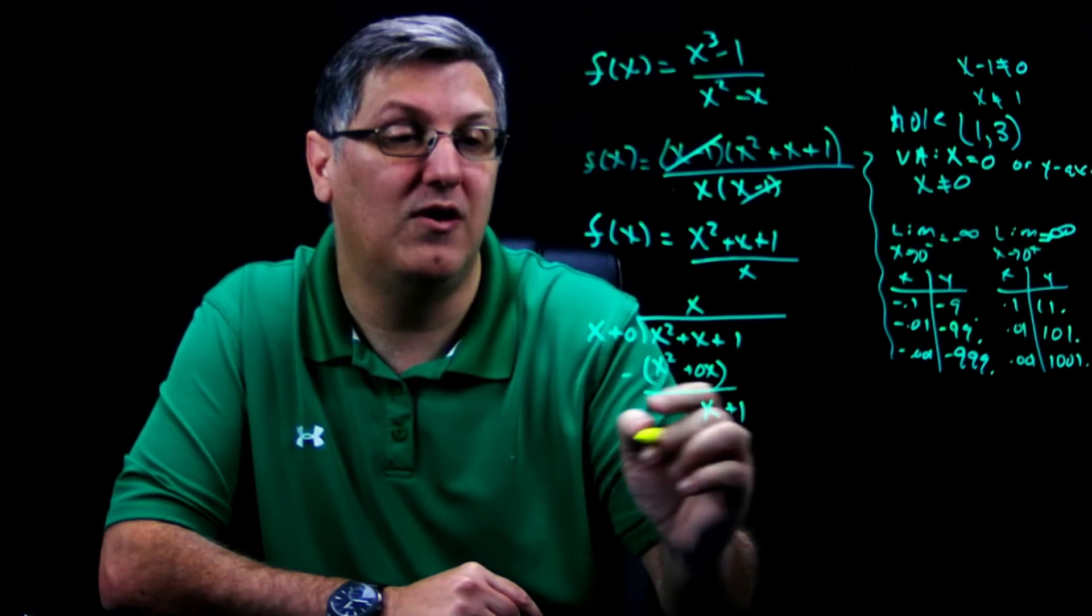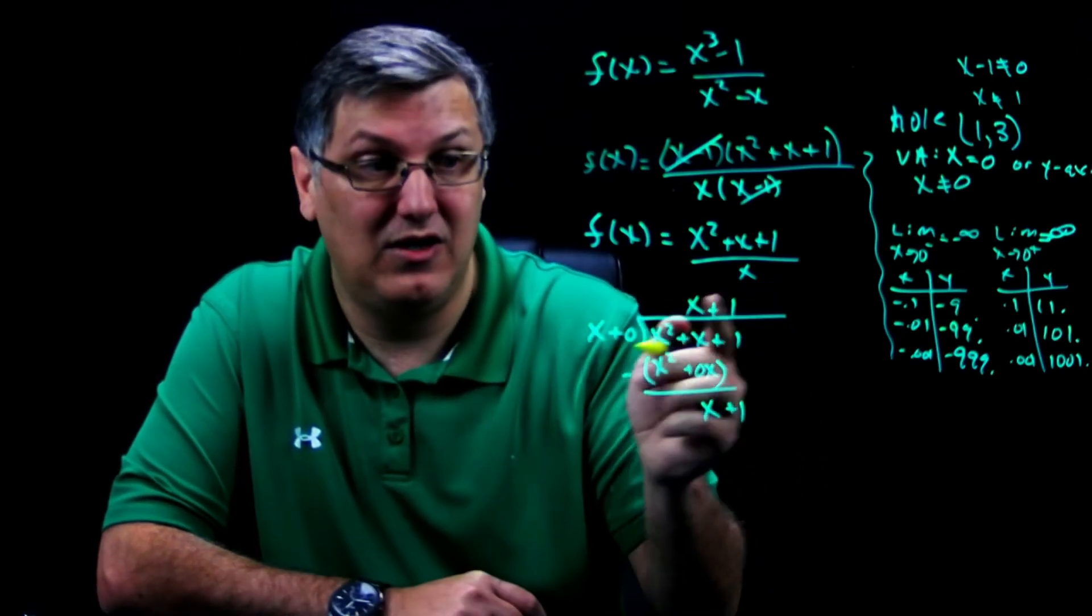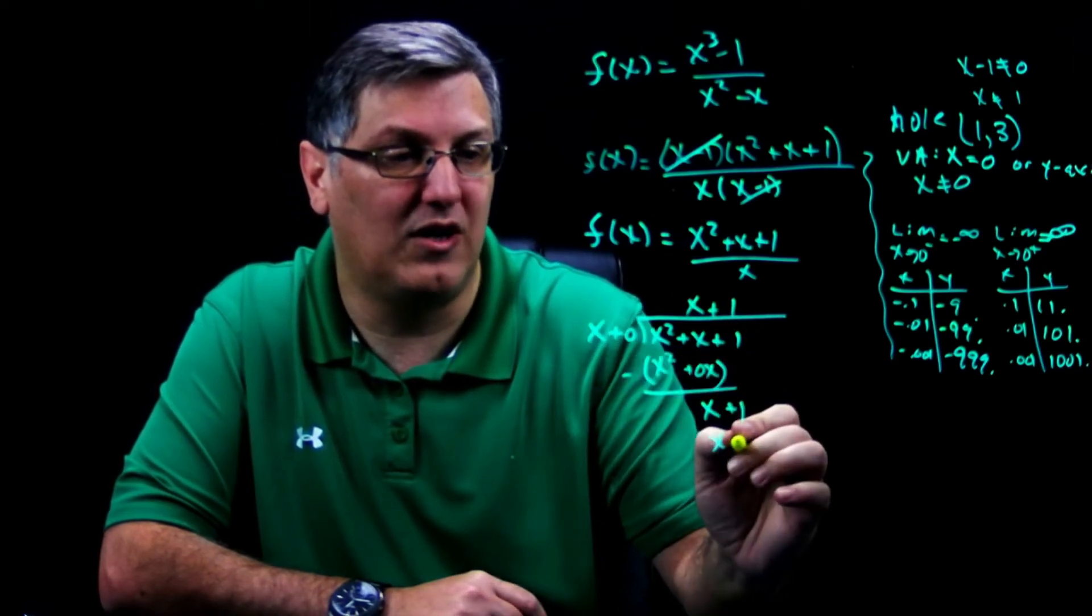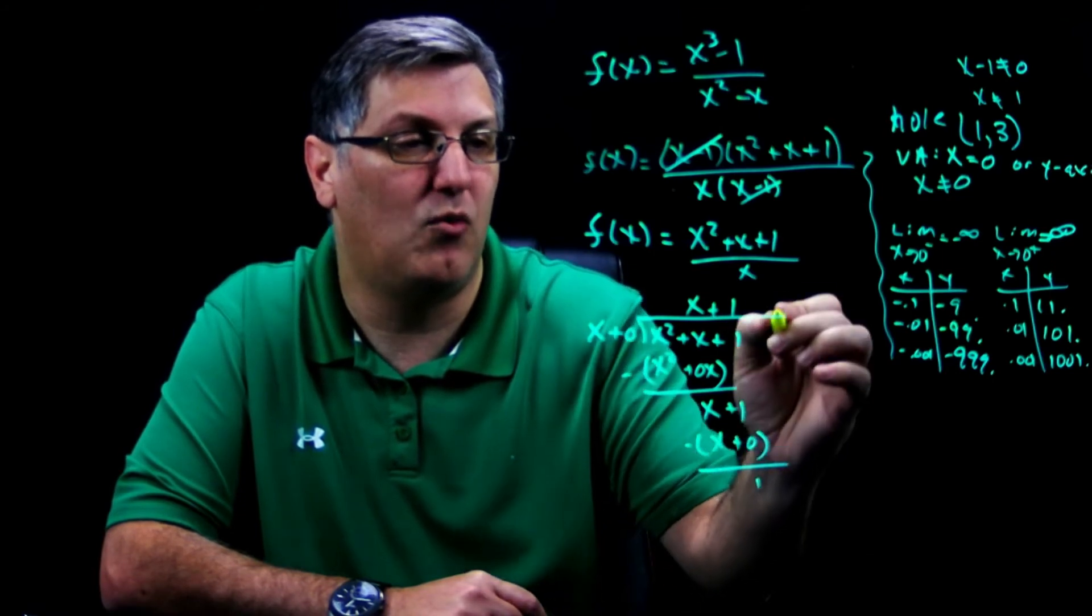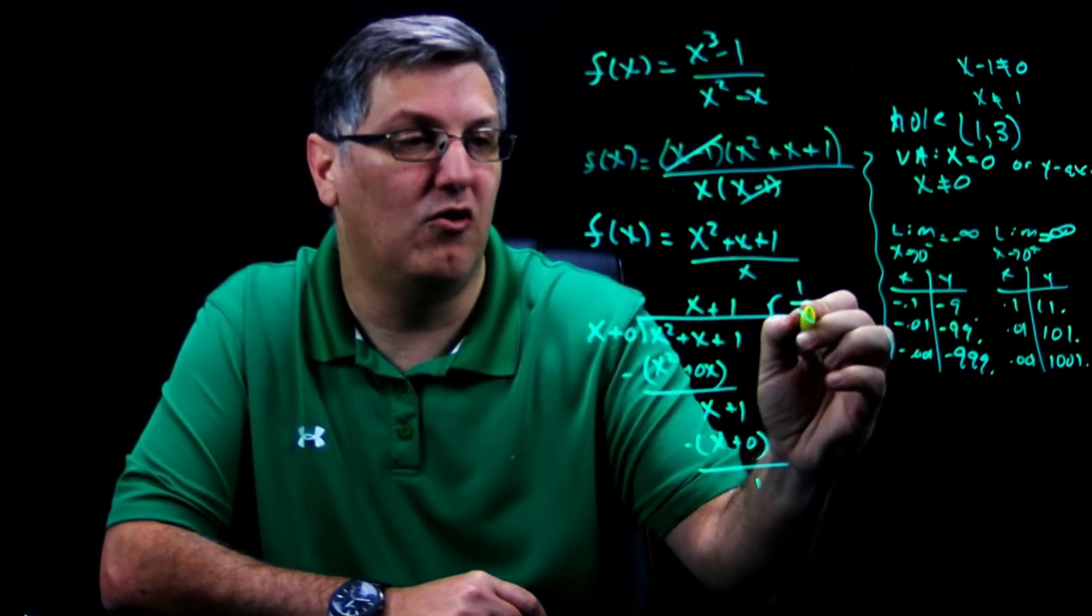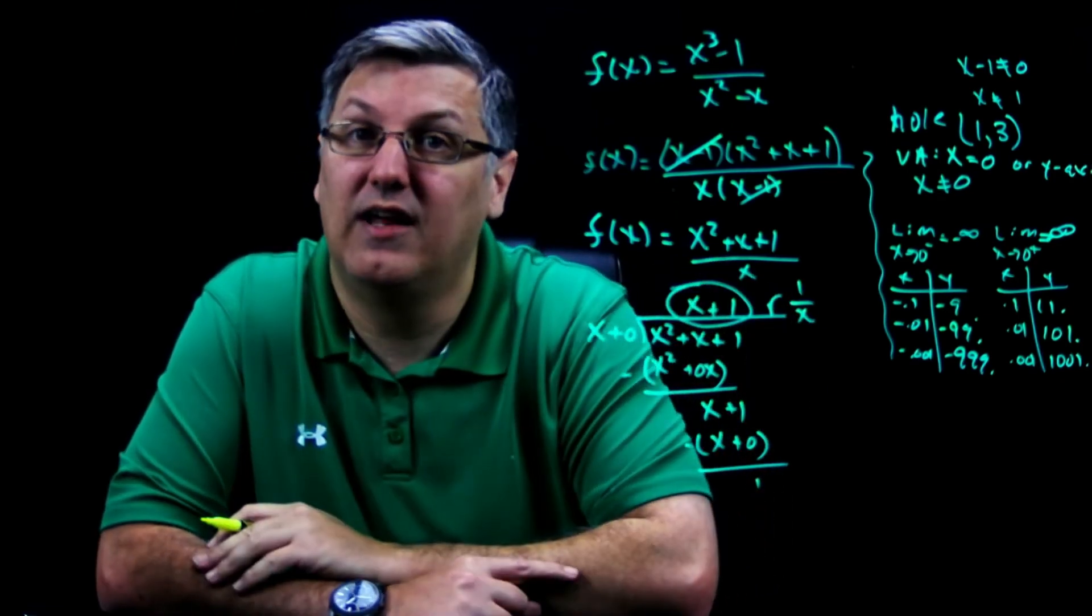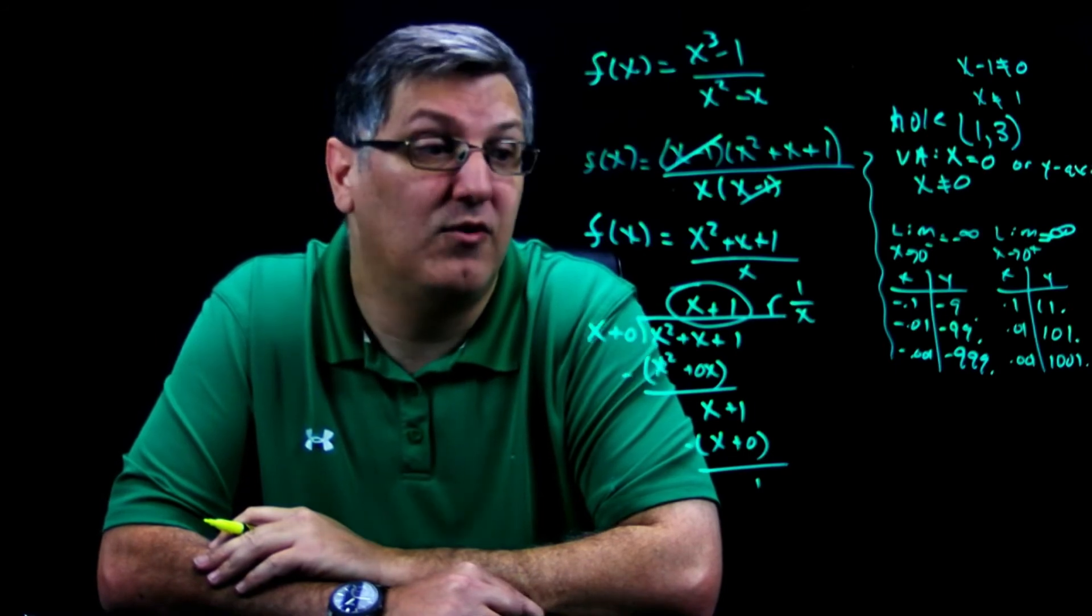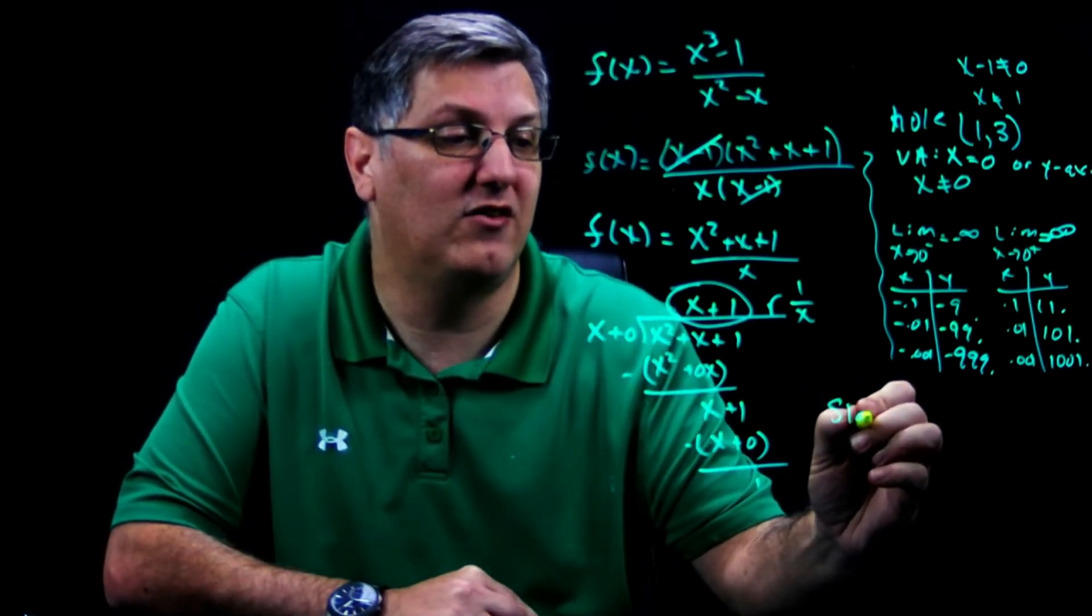How many times does that go into x? Well, clearly it only goes in one time. So we're going to do one times x is x, and one times zero still just gives me zero. I subtract the whole thing, and I have a one. So my remainder is one over x. Your quotient is your slant asymptote of the graph. So I have a slant asymptote.